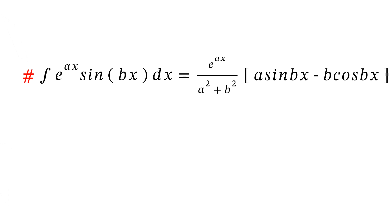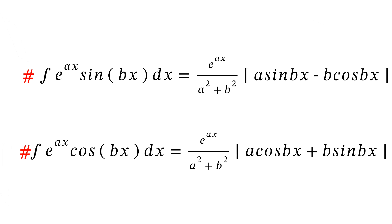Integral of e^(ax)·sine(bx) dx equals e^(ax) divided by (a² + b²) multiplied by (a·sine(bx) minus b·cos(bx)). The next integral of e^(ax)·cos(bx) dx equals e^(ax) divided by (a² + b²) multiplied by (a·cos(bx) plus b·sine(bx)). You can see that the coefficient e^(ax) divided by (a² + b²) is the same for both formulas.